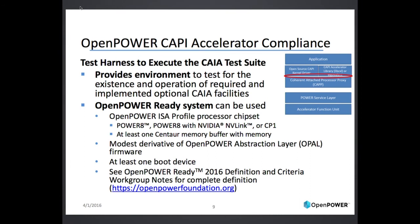Now let's talk about the CAIA hardware interface. The test harness to execute the CAIA test suite should provide an environment to test the existence and operation of required and implemented optional CAIA facilities. An OpenPower Ready system can be used. An OpenPower Ready system contains the OpenPower ISA profile processor chipset, which is the Power8 processor, Power8 with NVIDIA NVLink processor, or CP1 processor. It has at least one Centaur memory buffer with memory, a modest derivative of the OpenPower abstraction layer firmware, and at least one boot device. You can see the OpenPower Ready 2016 definition and criteria in the work group notes on the OpenPower Foundation public website.